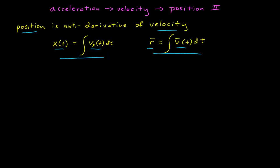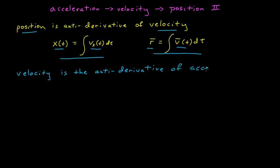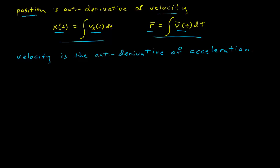If we have the acceleration, we can get to the velocity exactly the same way, because the velocity is the antiderivative of acceleration. Since mathematically this is exactly the same as we did in the last module, we'll just do an example and then move on. There isn't anything particularly new about this process — it's now just acceleration and velocity instead of velocity and position.